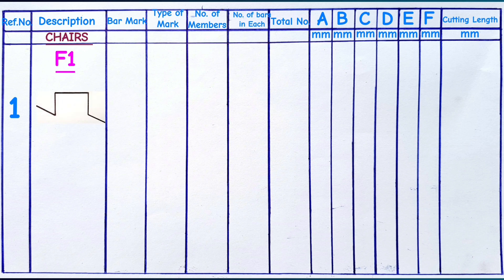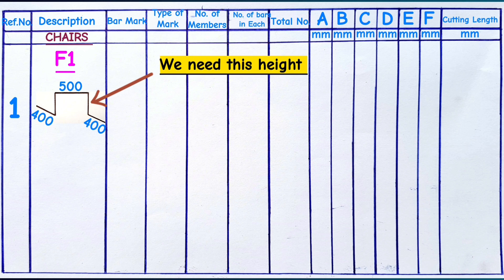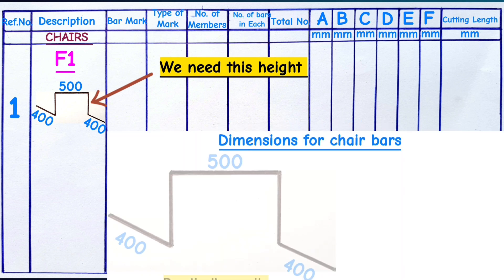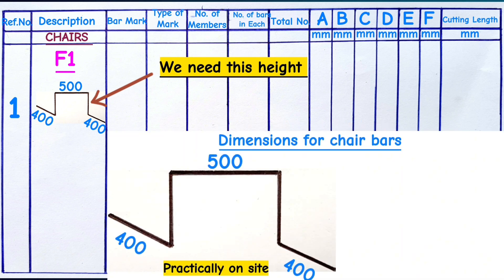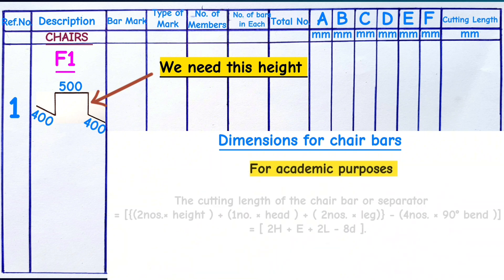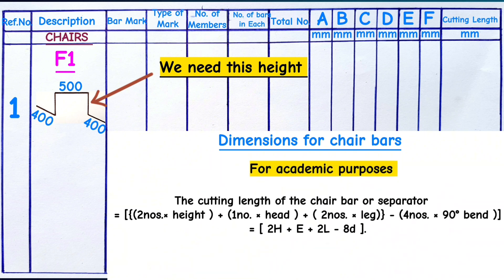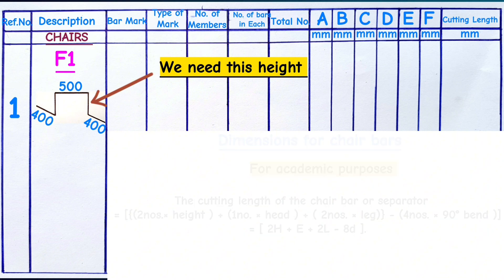Label the footing for which you are providing the chairs — set footing F1. Mark the first side as 400 millimeters and the other side also as 400 millimeters. The top side has 500 millimeters, and what we need to calculate is the height. I normally use these measurements as default for practical work on site. For academic purposes, use a set of formulas to find out the legs, the height, and the head of the chair bars.